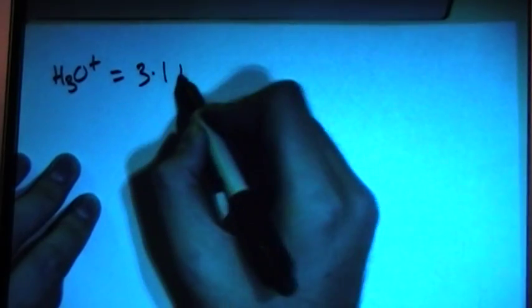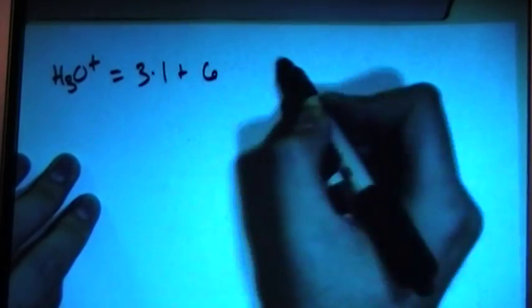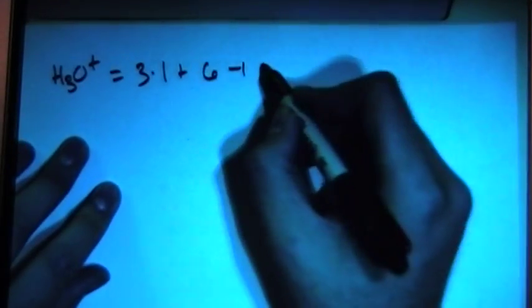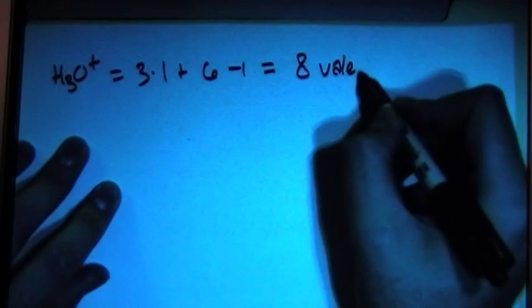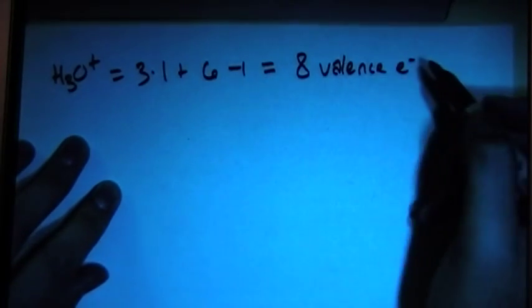And we have three hydrogens, each with one valence electron, plus one oxygen, which gives us six, and then minus one because of the positive charge. So this is going to give us a total of eight valence electrons.